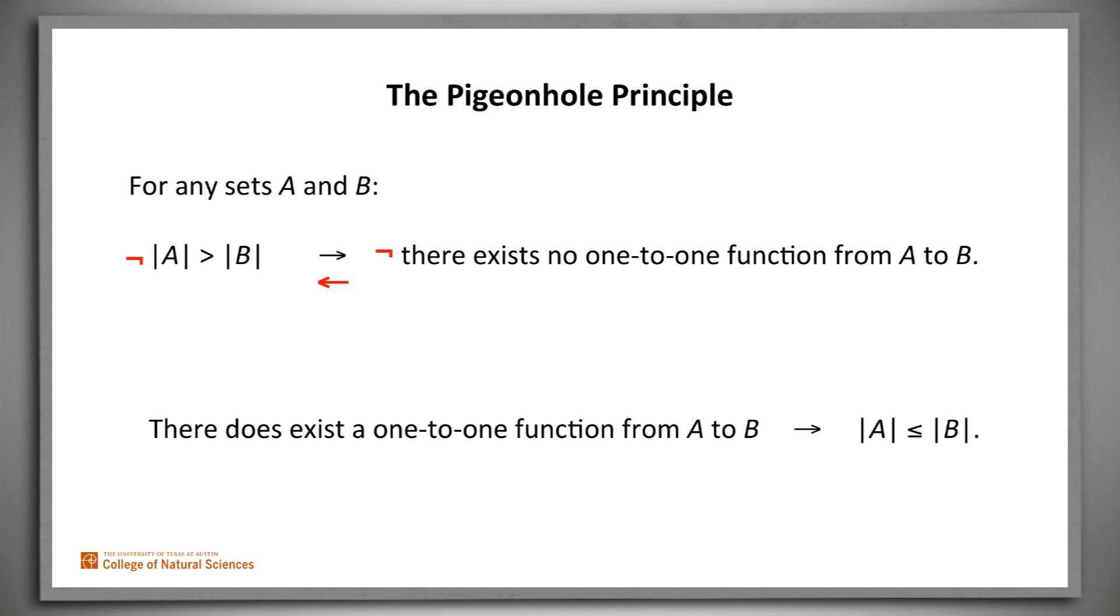If there does exist a one-to-one function from A to B, then the number of elements in A is not greater than, in other words, is less than or equal to the number of elements in B.